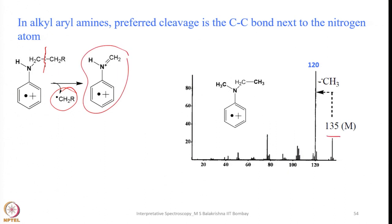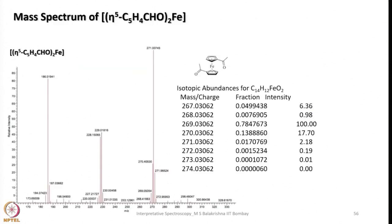Here is an example of a ferrocinium species — an acyl compound of ferrocene. The mass spectrum is given with a 100% abundant peak. Try to analyze the mass spectrum of ferrocene bearing an acyl group on each cyclopentadienyl group; all data is provided. Simulation values are also provided — try to analyze this systematically as done for the previous organic molecule examples. In the next lecture, more examples involving inorganic compounds and molecules containing halogens will be covered. Thank you.